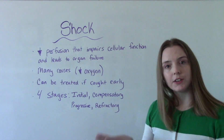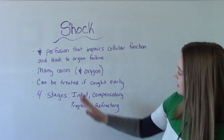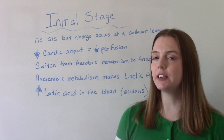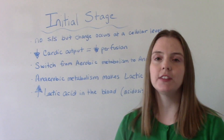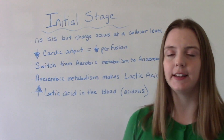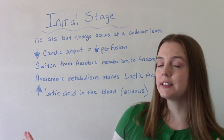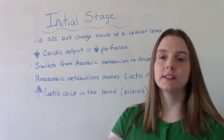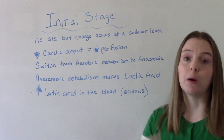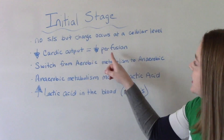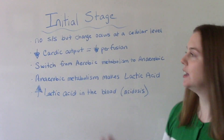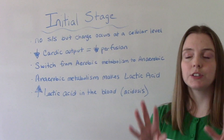The four stages we're going to talk about here in this video are: what's happening in the body in the initial, compensatory, progressive, and refractory stages. In the initial stage of shock, the patient might not have any obvious signs or symptoms because a lot of the damage being done is at the cellular level. It doesn't matter the type of shock — hypovolemic shock, septic shock, etc. — what's going to happen is there's going to be low cardiac output. Blood is not going to be pumped adequately throughout the body. Low cardiac output leads to low perfusion — the bringing of oxygenated blood to our tissues and organs — and all of that is going to be decreased.